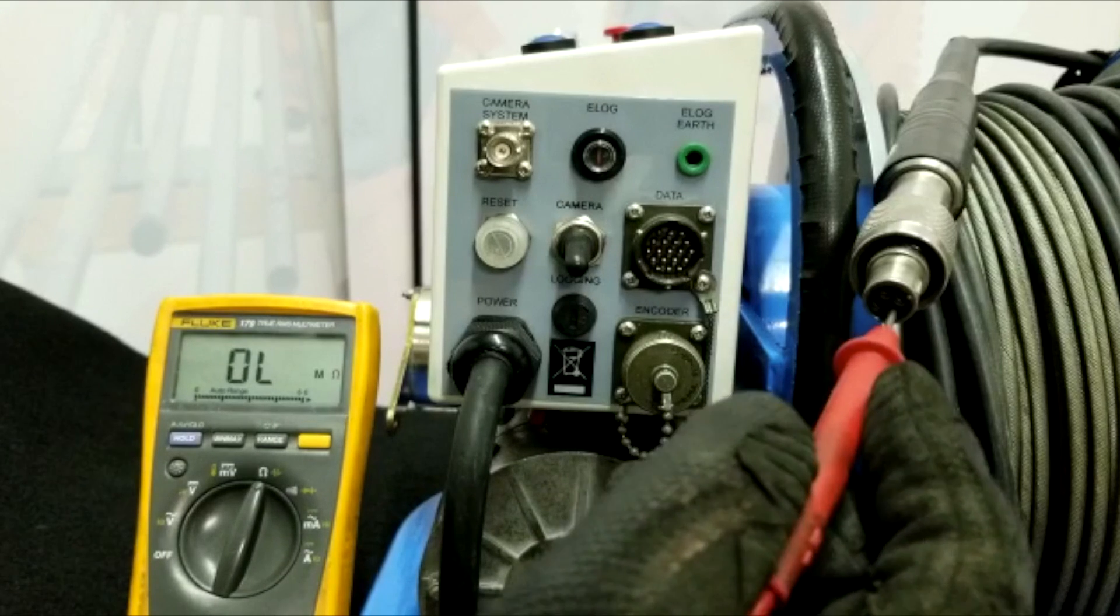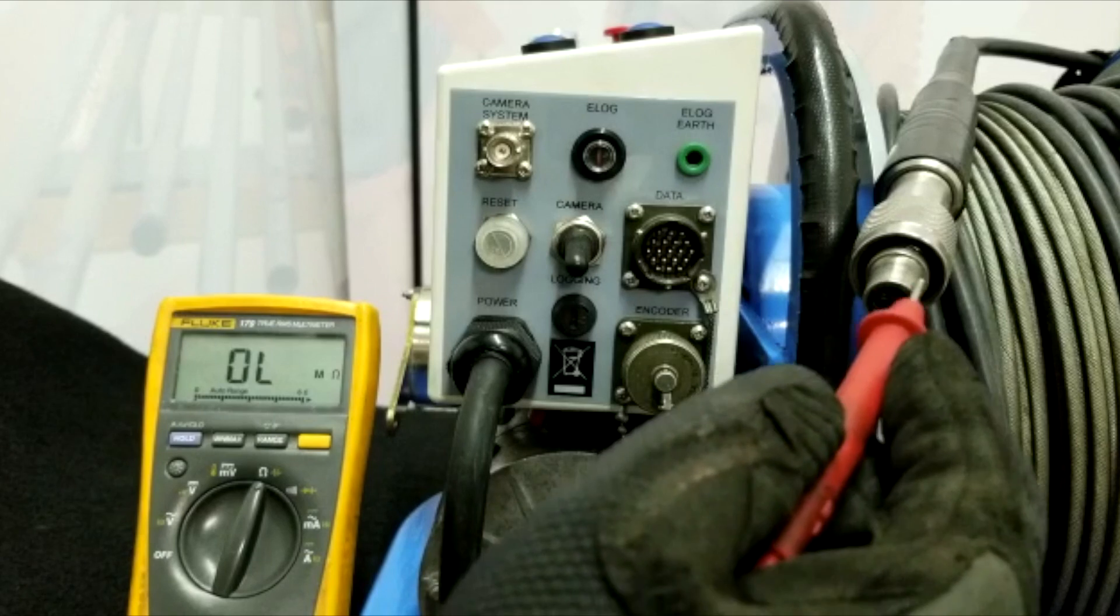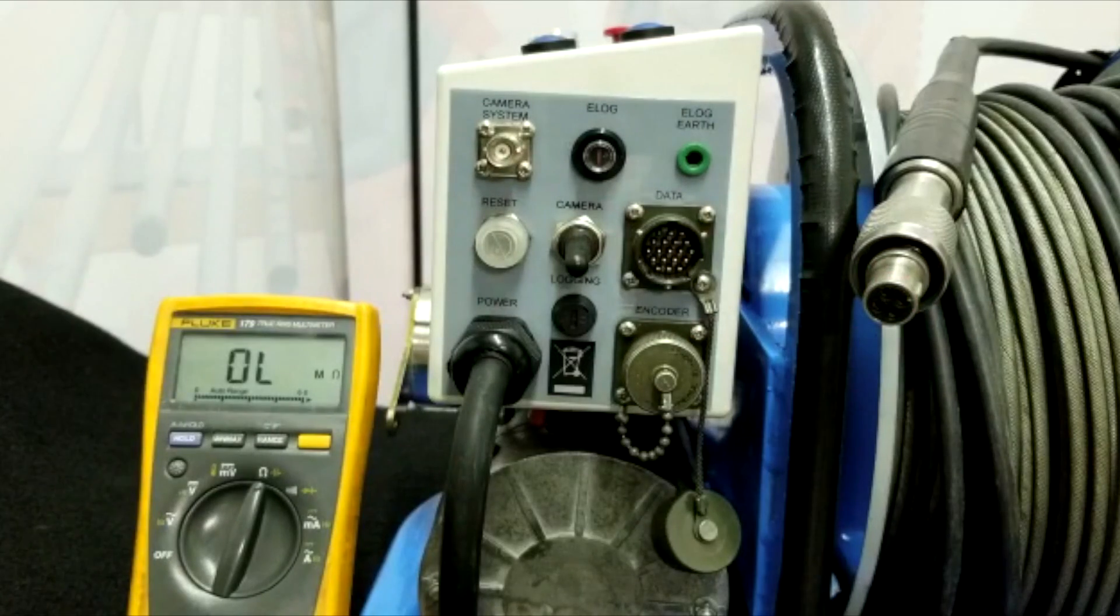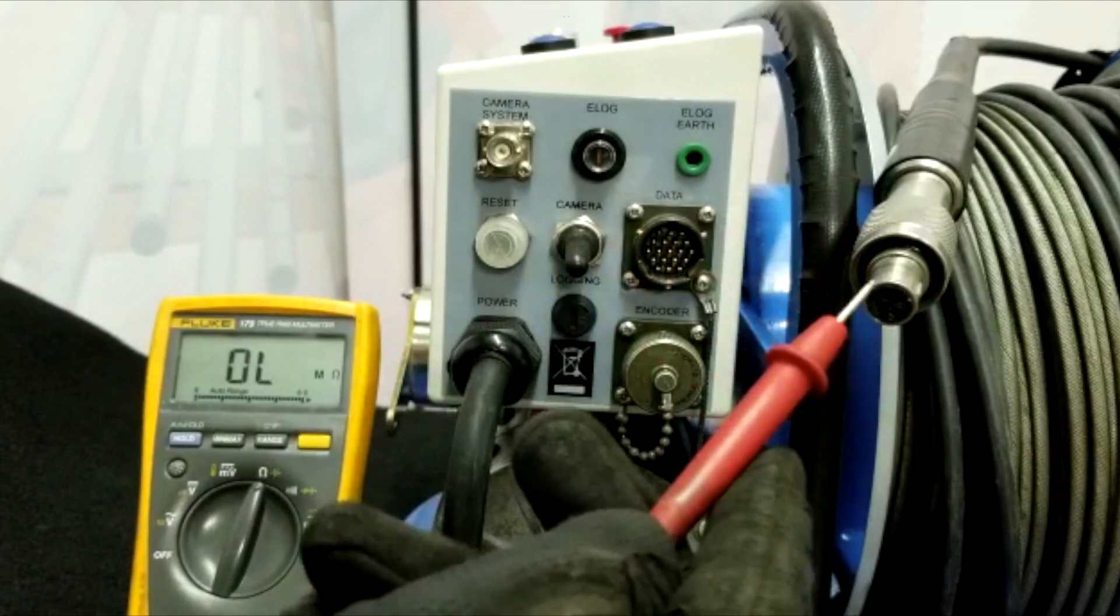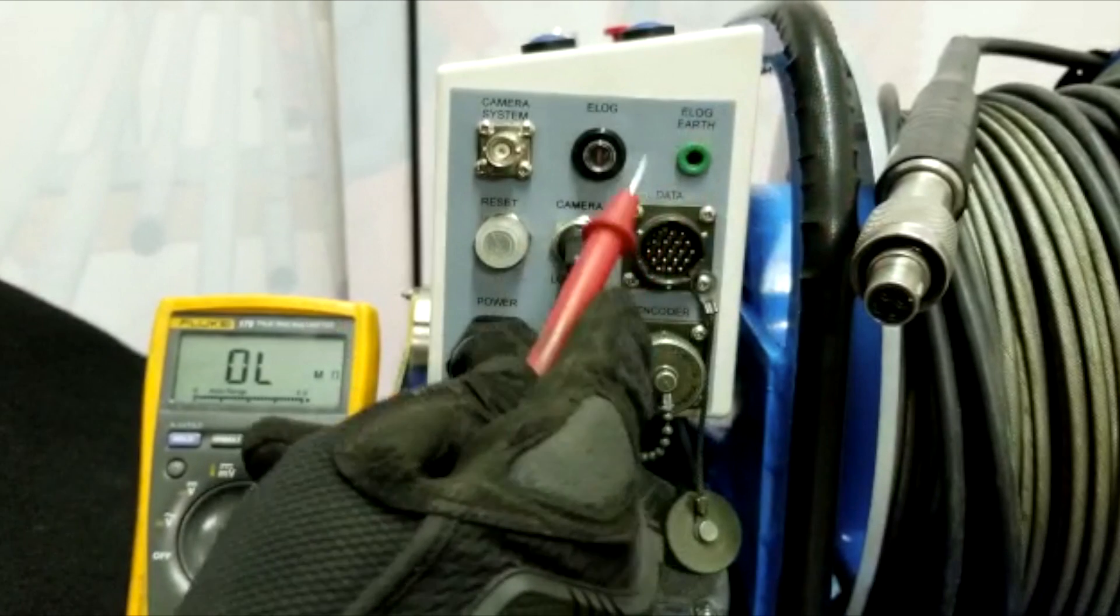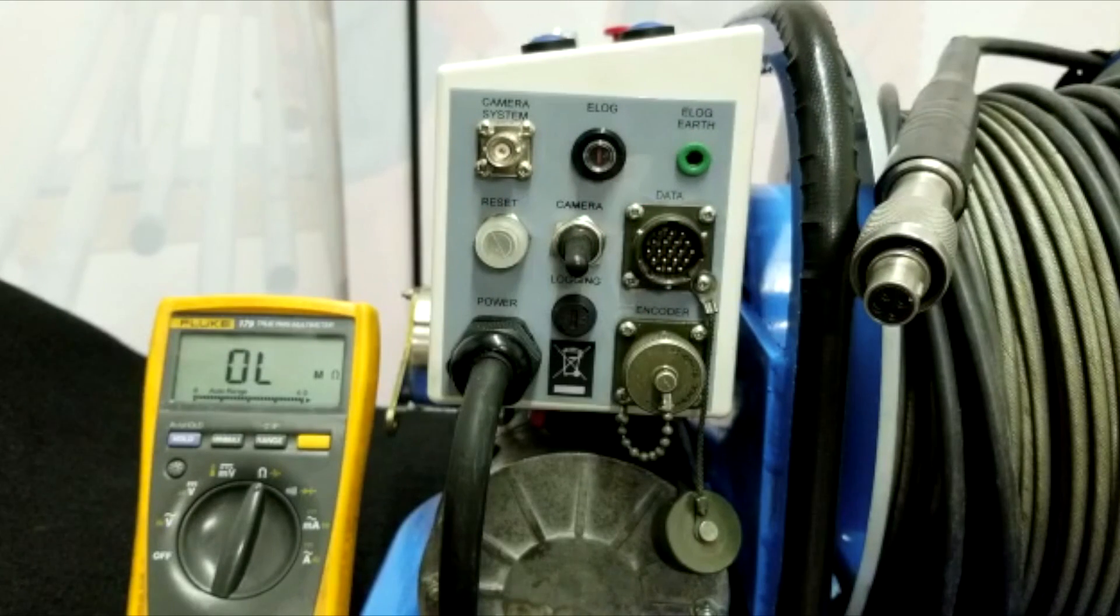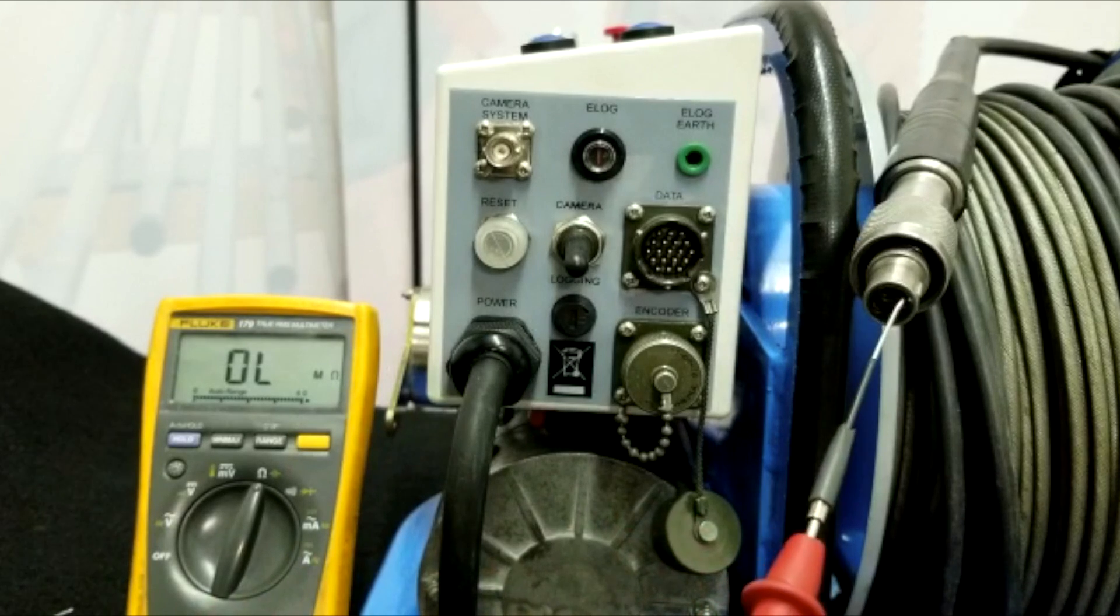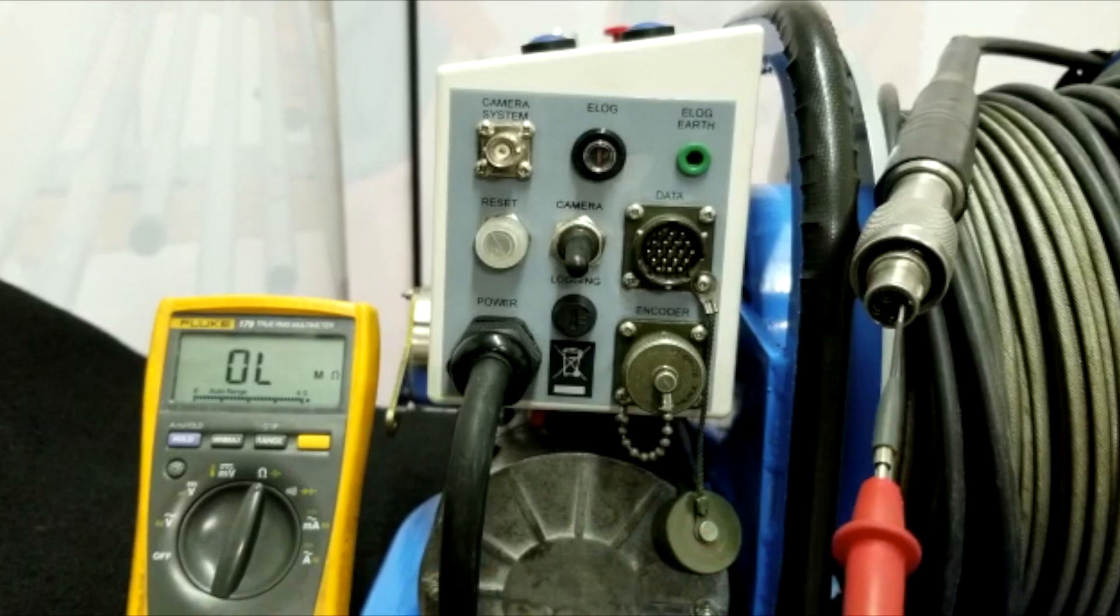The other one, the shield, is armor. So we're gonna check this continuity against our data port. Alright, we're gonna use a small probe to insert on pin number one.